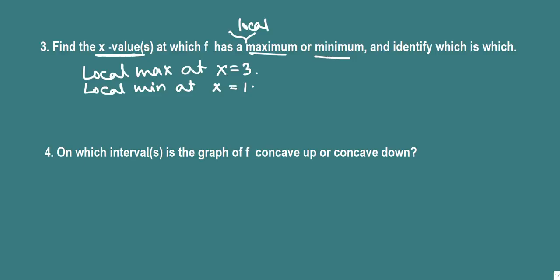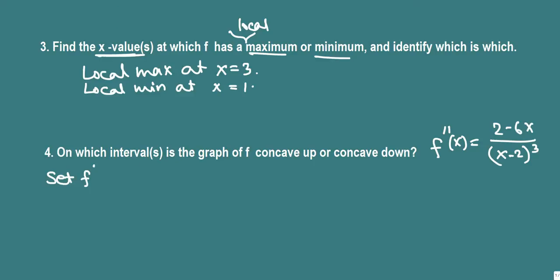Now we find the intervals where the function is concave up or concave down using the second derivative. The second derivative is (2 minus 6x) over (x minus 2) cubed. Setting the second derivative equal to zero: 2 minus 6x equals 0 (since only the numerator matters). Solving gives x equals 1/3, which is the candidate for an inflection point.